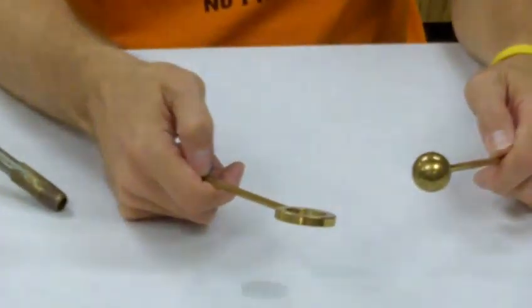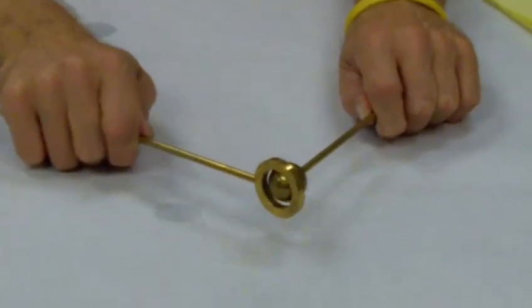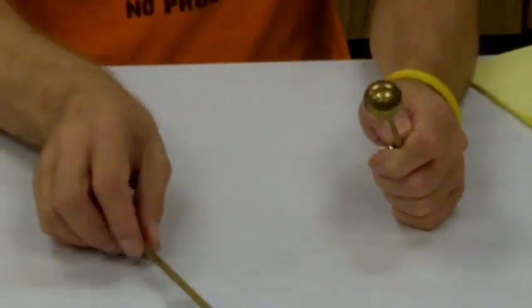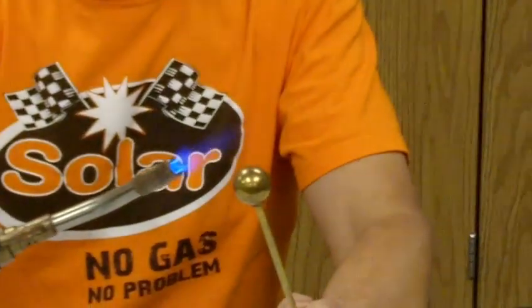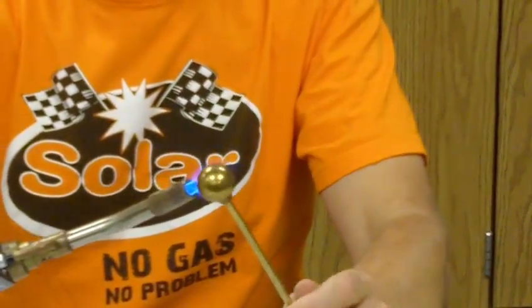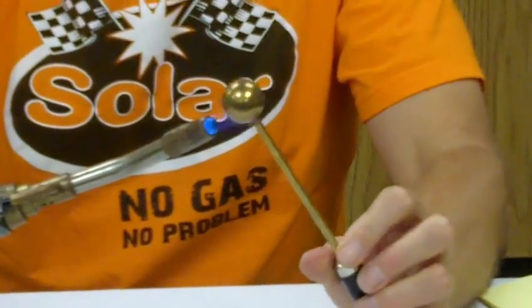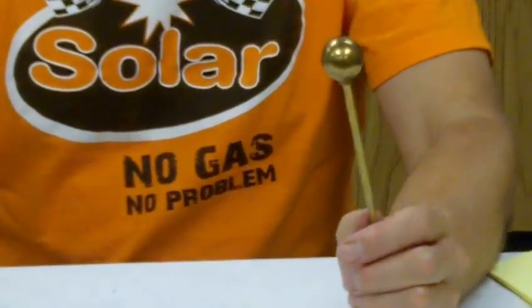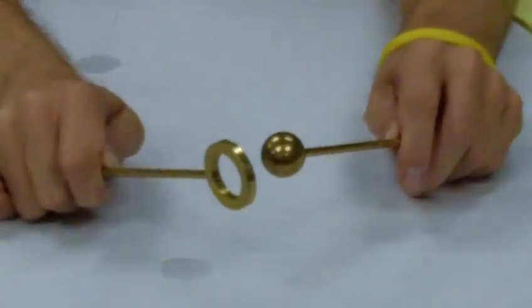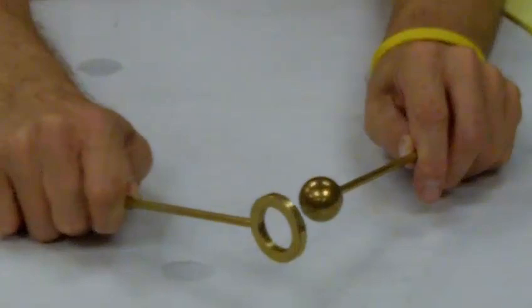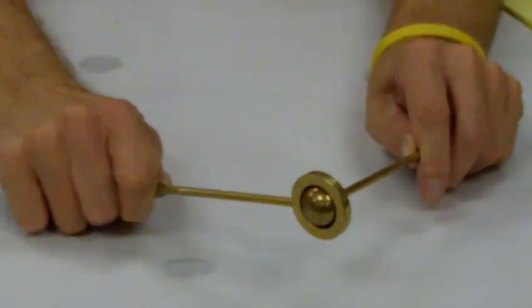Now we know that gases can expand and contract with temperature, but can solids? Check it out. In my hands are two metal objects. They're made of brass. The ball fits snugly through the ring. They're both at room temperature. But look what happens when I heat up the ball with the torch. Now when you heat up a solid, the molecules move faster and faster, start to vibrate, and they expand. The ball no longer can fit through the ring, because the atoms have expanded, and it is now too large.